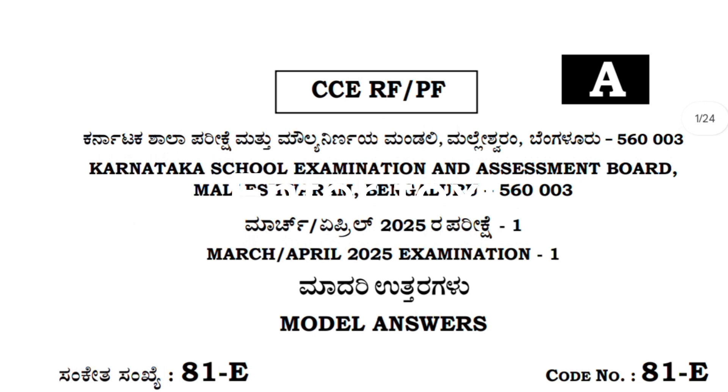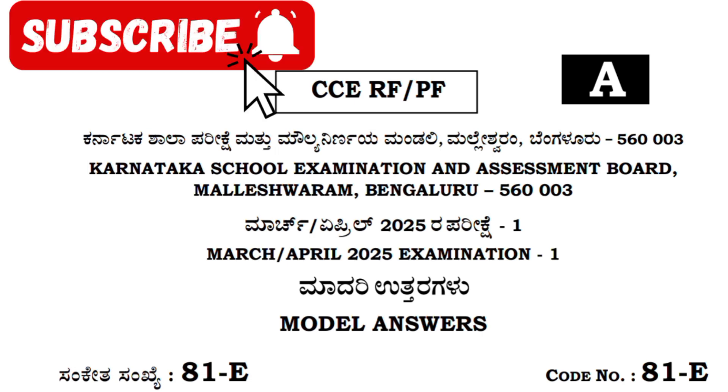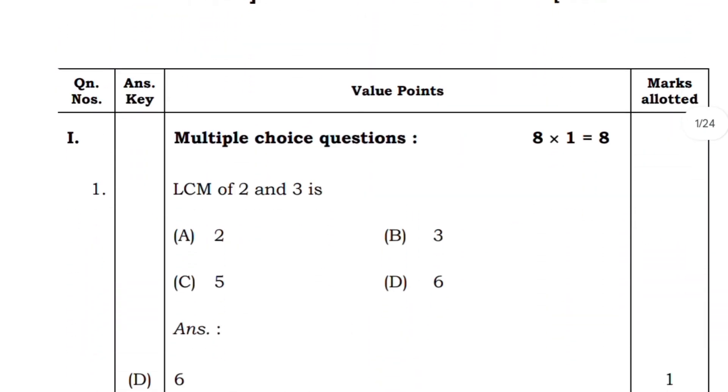Hello my dear students, welcome back to my channel. In this video I will be discussing the mathematics question paper of SLC examination 1 of the year 2025. Starting with the first question, this is from real numbers, LCM of 2 and 3 is 6.